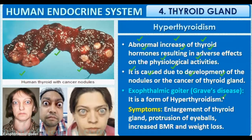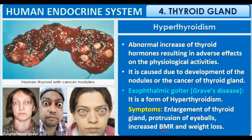Exophthalmic goiter, or Graves' disease, is also a type of hyperthyroidism. It involves enlargement of the thyroid gland and protrusion of the eyeballs. There is increased BMR and the patient loses weight progressively. It is considered acute hyperthyroidism and can occur in cancer cases as well.